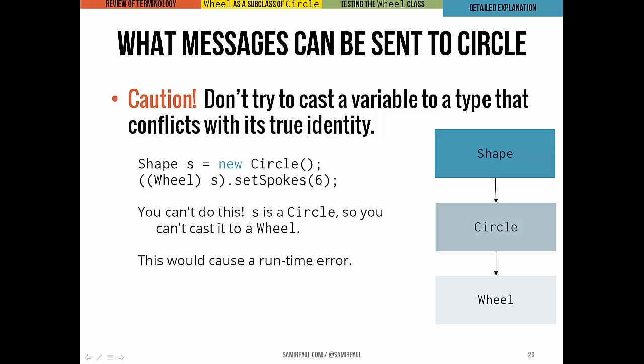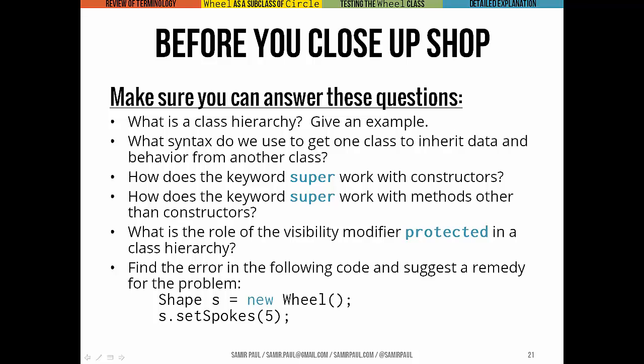We're going to see more examples of this in the next lecture, so don't worry if it's slightly confusing to you. Just know that if you have subclass specific methods, you've got to cast any interface or higher up variables to that subclass so that you can call those subclass specific methods without having a problem. Before we close up shop, here are the things you want to think about. What's a class hierarchy? Give me an example of one. How do we get one class to inherit data and behavior, that is, variables and methods, from another class? How does super work with constructors, and how does it work with methods other than constructors? What is protected? What does it do? How do we use it? What is it for? What does it mean? And tell me what the error is in the following little code chunk. Shape s equals new Wheel, s dot setSpokes 5. That's it for right now. More on this in the next lecture.